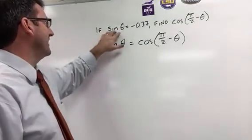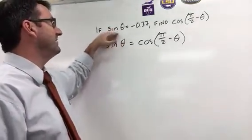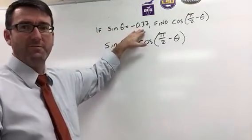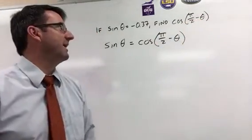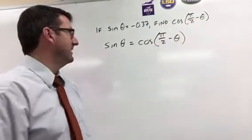And notice that we're trying to find, if we're given that sine of theta equals negative 0.37 and we're asked to find the cosine of pi over 2 minus theta. Well,